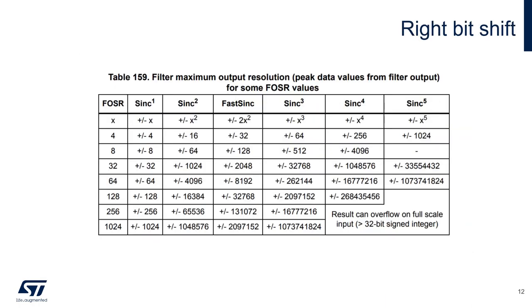The resolution of the output data depends on both the filter order and the decimation ratio. For each combination of order and decimation ratio, there will be a specific maximum output value. The internal structure of the DFSDM supports up to 32 bits, which cannot be exceeded.